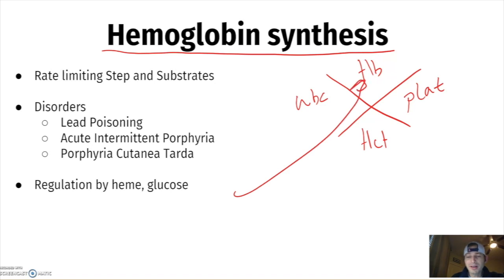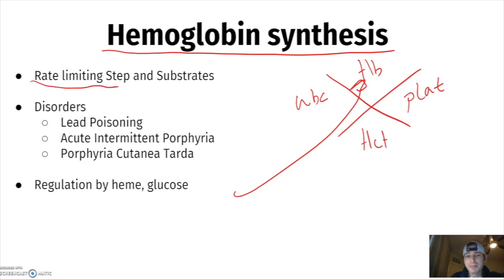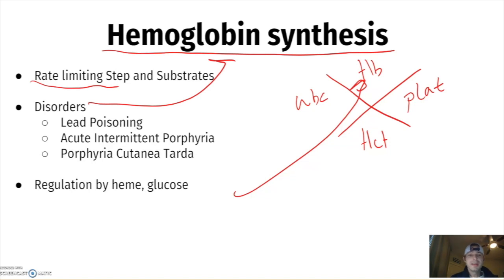Let's dive into hemoglobin — specifically how it's created. The rate-limiting step in biochemistry is what you must know. Disorders that can inhibit or mess up hemoglobin synthesis include lead poisoning, AIP (acute intermittent porphyria), and porphyria cutanea tarda.